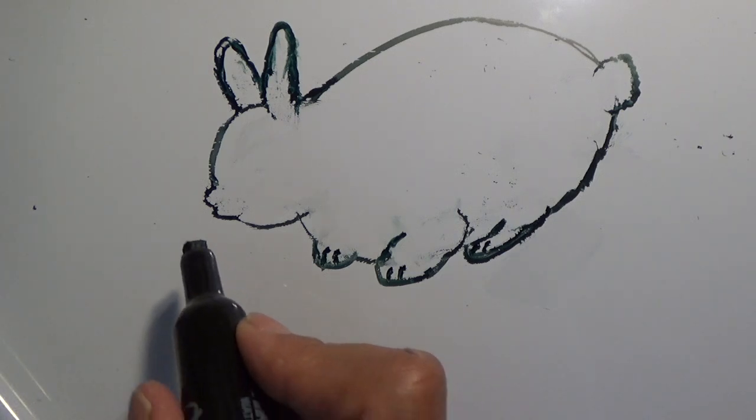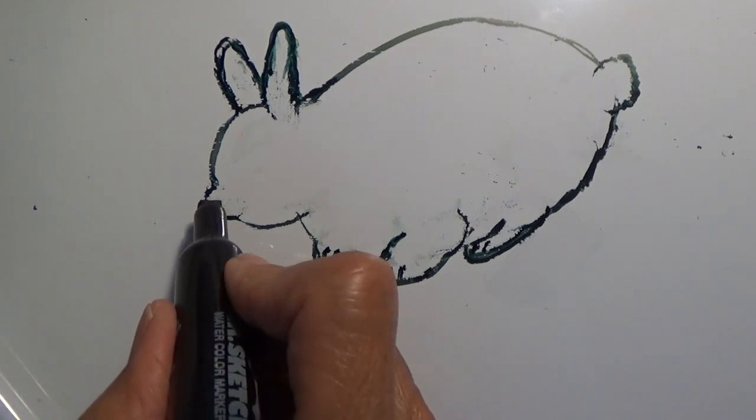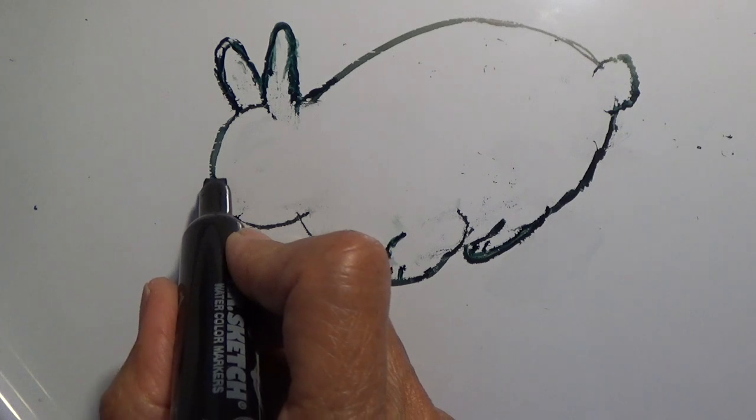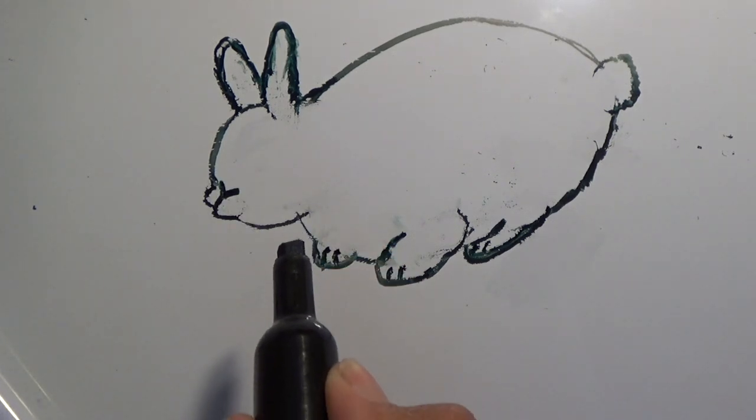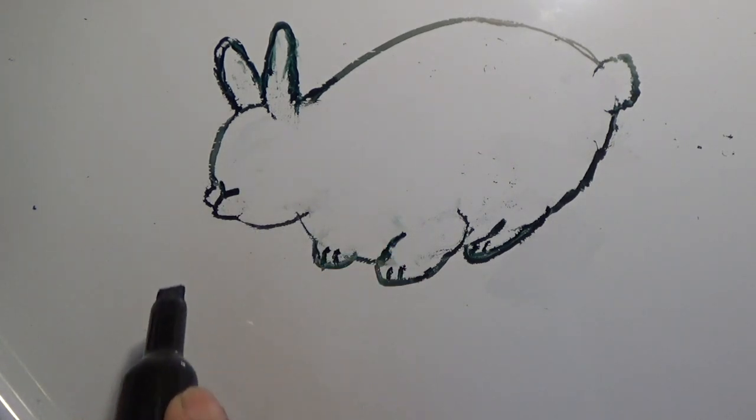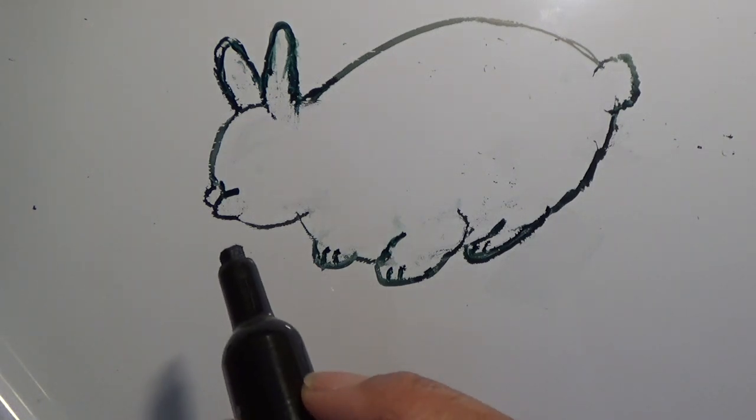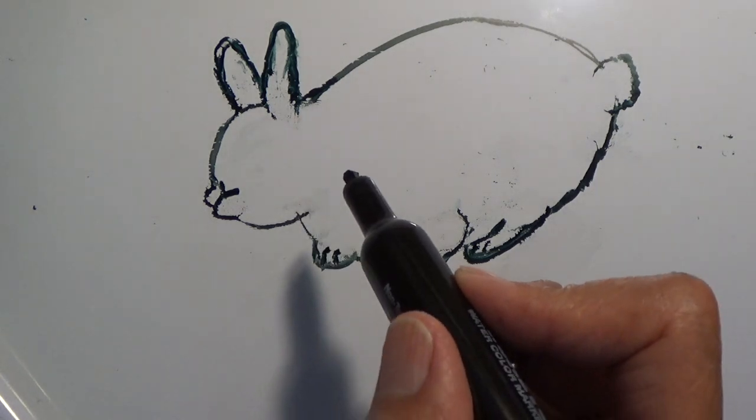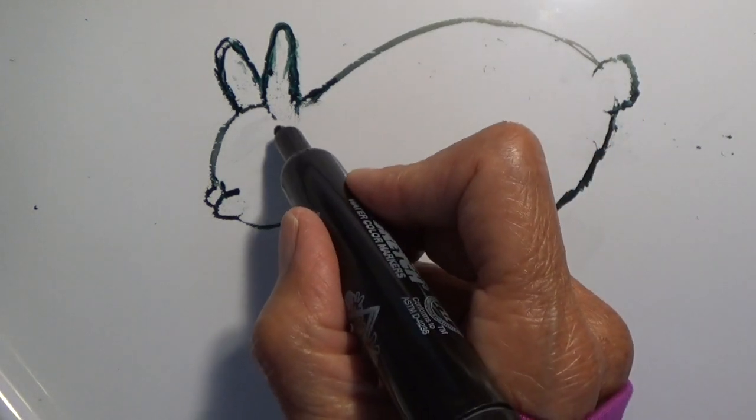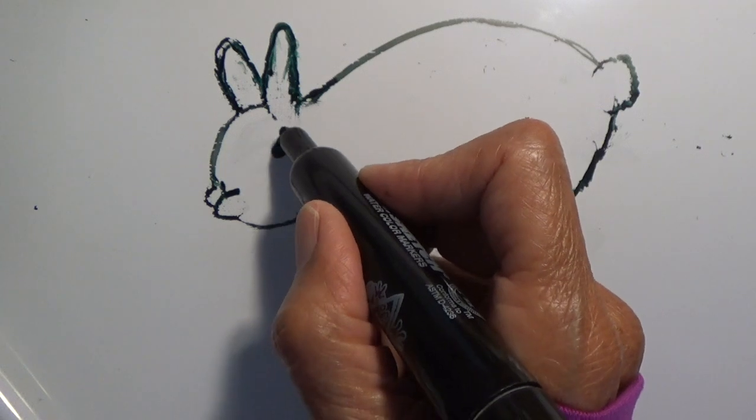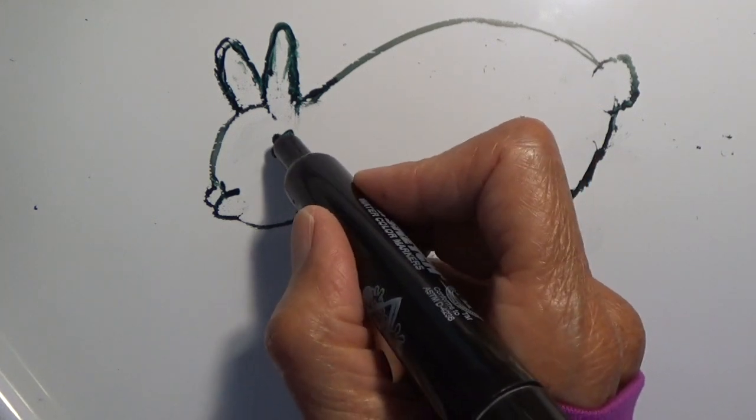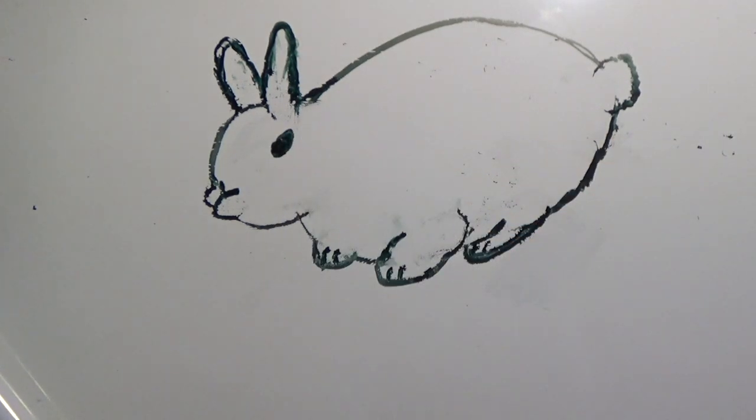Then, for the nose, we are going to draw a Y shape here for its nose. See that Y there? And how about an almond shape for the eye? The eye that we can see on this side. Can't see the other side because it's on the other side.